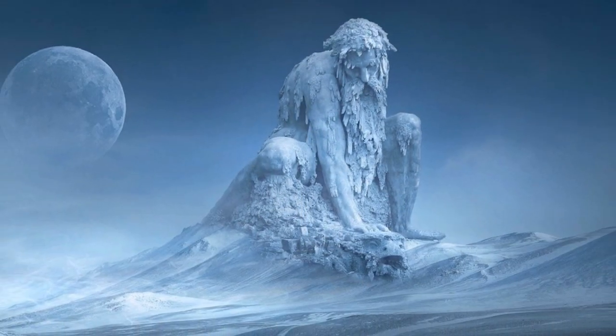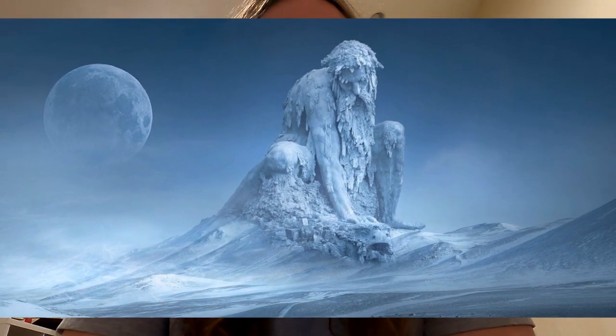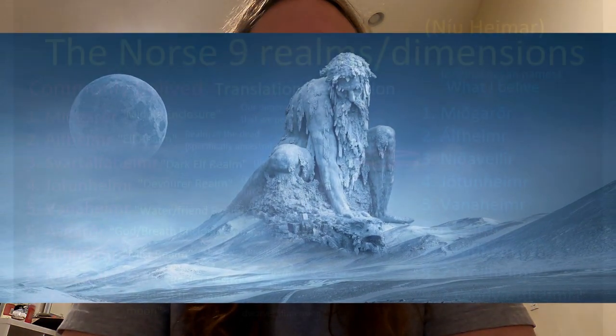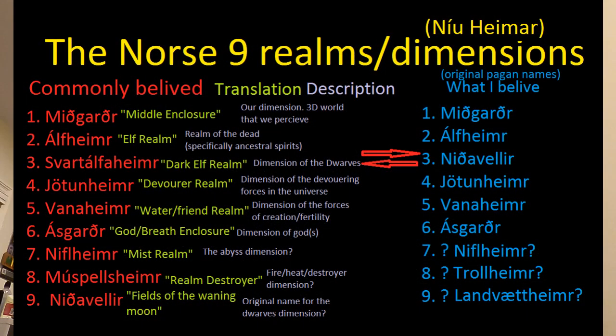Then there is this ninth dimension. I think this could most likely be the home of the landvetter, or nature spirits — we can maybe call this Landvettirheim. The nature spirits are a very important central part of pagan beliefs. They even had laws written down about these nature spirits and how to act properly around them. But these spirits don't really fit into any other realms here, so I think they also had their own dimension. These nine worlds — these Nyheimer — that's what I believe would be the original pagan nine worlds. But let me know if you guys have any ideas; I would love to hear. That's just my beliefs that I'm showing here.